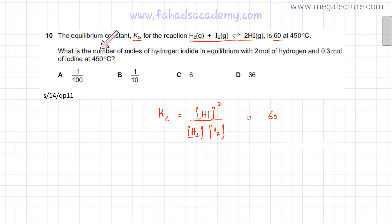What we are being asked: what is the number of moles of hydrogen iodide in equilibrium with 2 moles of hydrogen and 0.3 moles of iodine at 450 degrees centigrade? So we need to find the moles of HI which are in equilibrium.